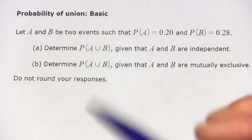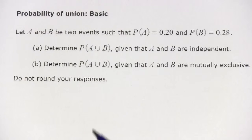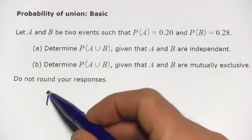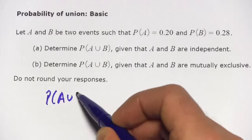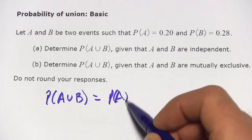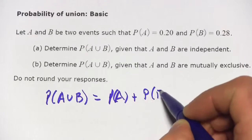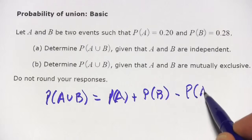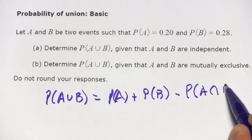When A and B are independent events, we're going to use the addition formula for probability. That formula states the probability of the union of A and B is the probability of A plus the probability of B minus the probability of the intersection of A and B.